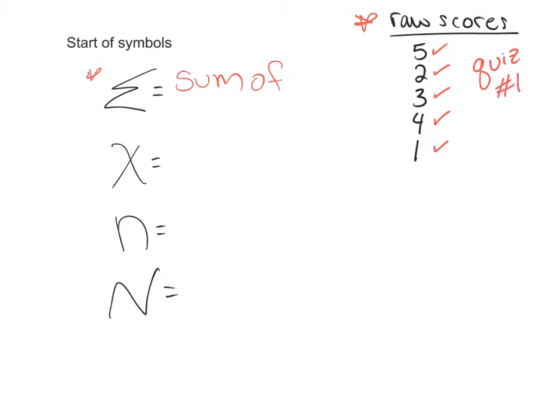Now let's use these numbers, these raw scores, and talk about the symbols. If I said sum of x, with x being the raw score, you would just add up all the raw scores. So you would add up five and two and three and four and one. In this case, sum of x would be 15, just adding up each of these raw scores. So x is the raw score.